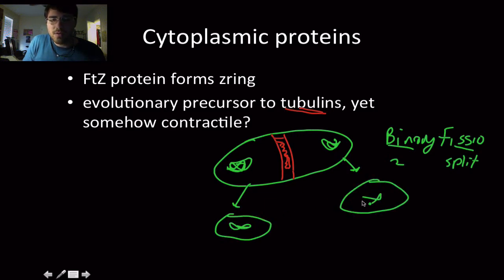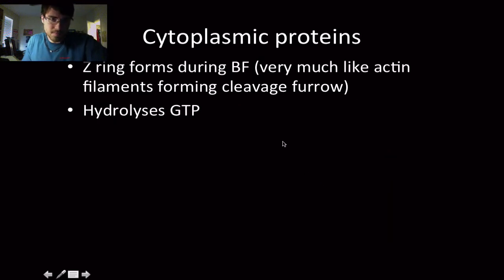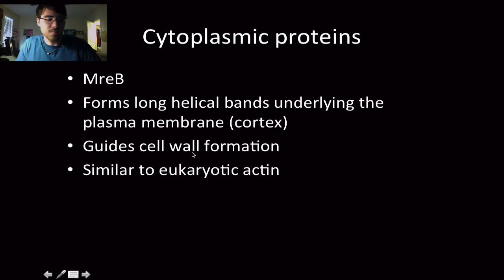They reproduce after it's replicated both of its DNA, giving us two genetically identical bacterial cells. The Z-ring forms during binary fission, very much like actin filaments forming a cleavage furrow. One has a functional relation and then a structural relation. And it hydrolyzes GTP as its primary energy source instead of ATP. What the advantages of that is, I don't know.